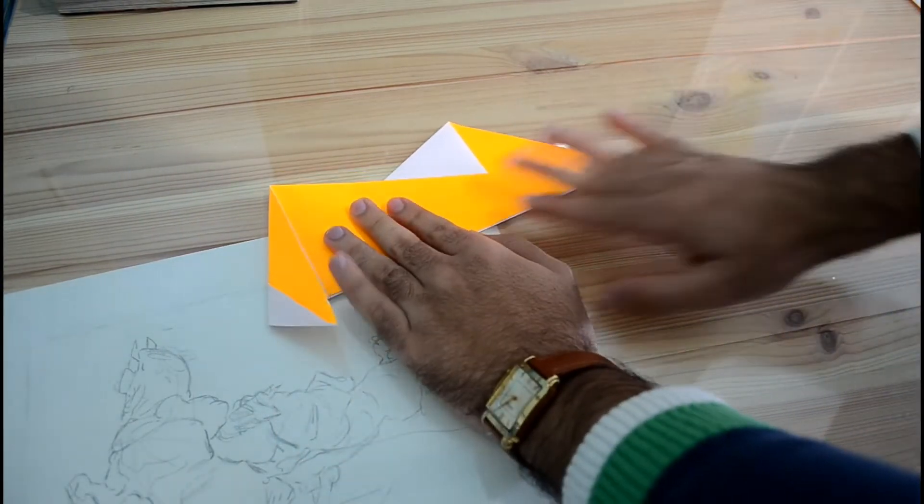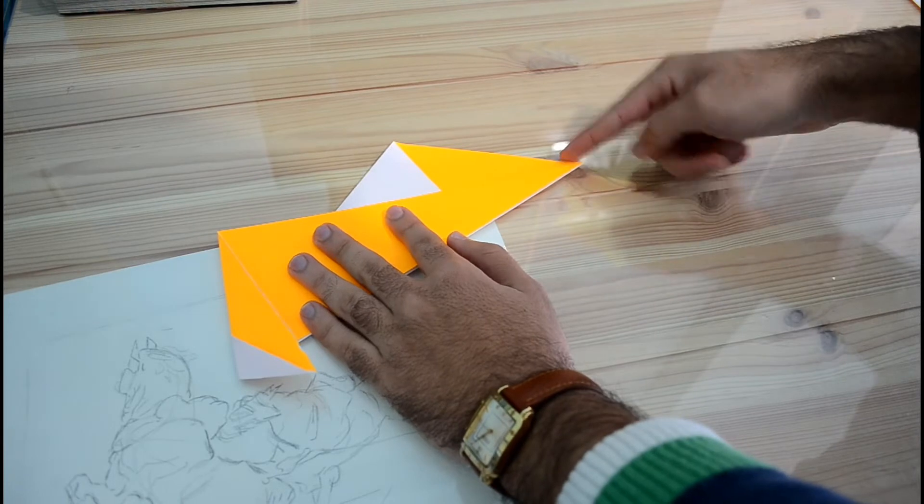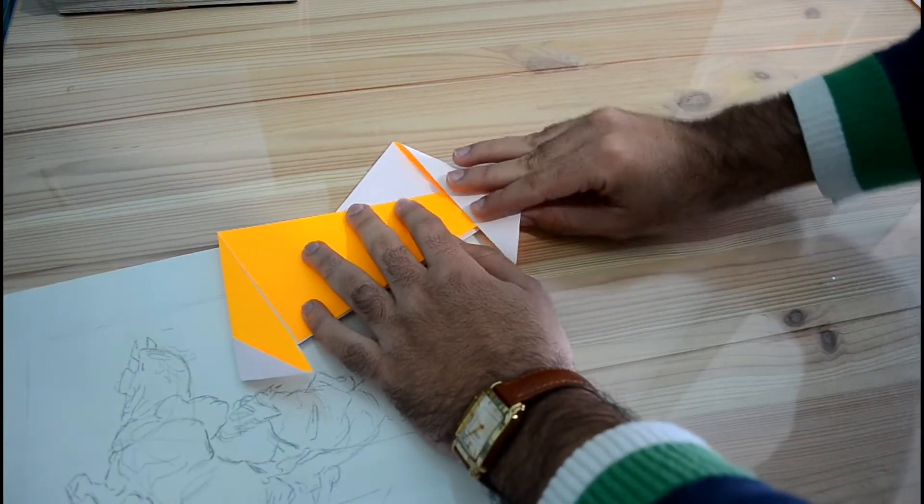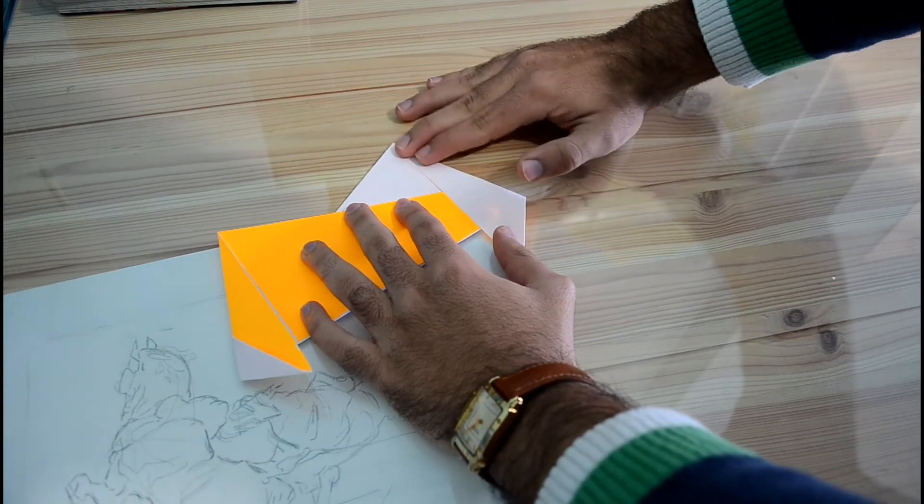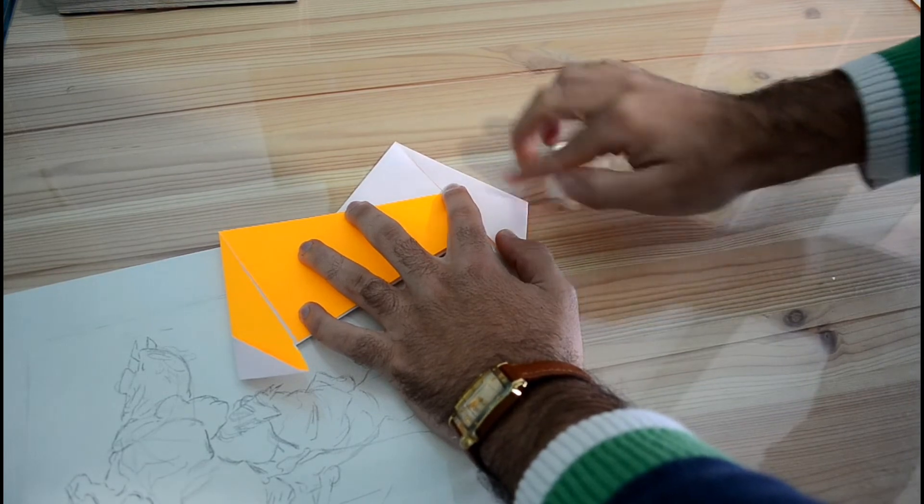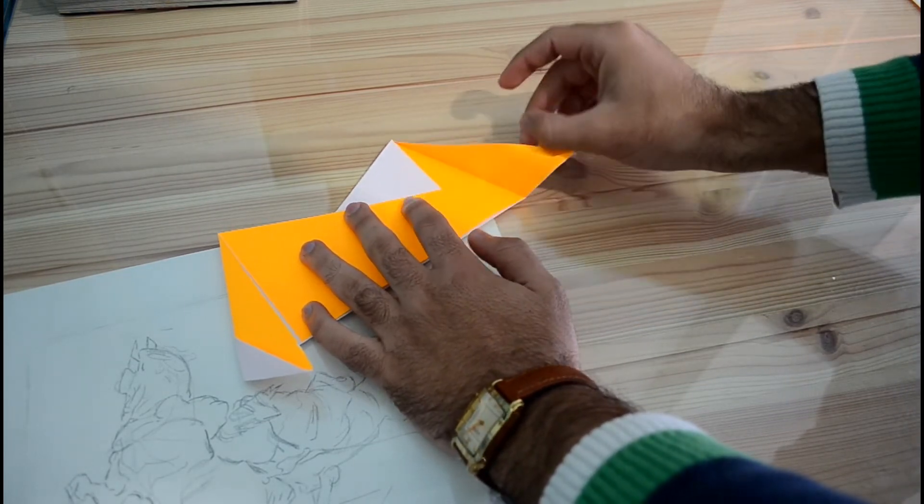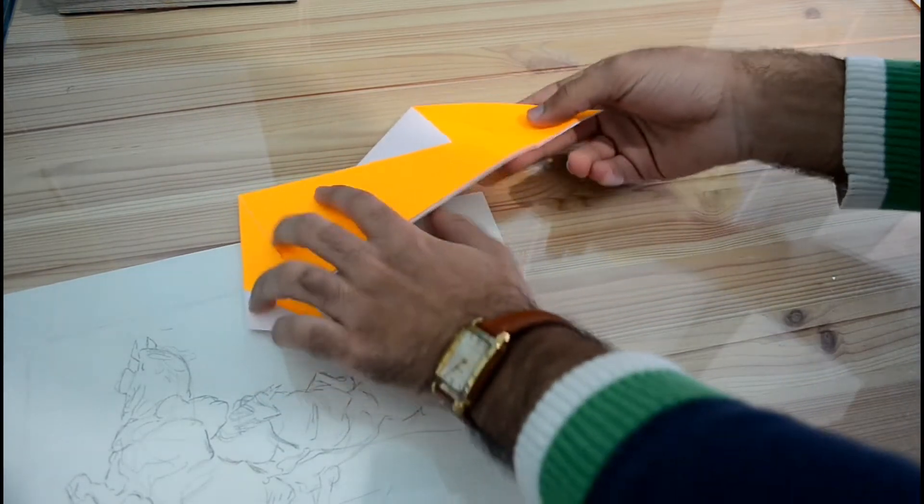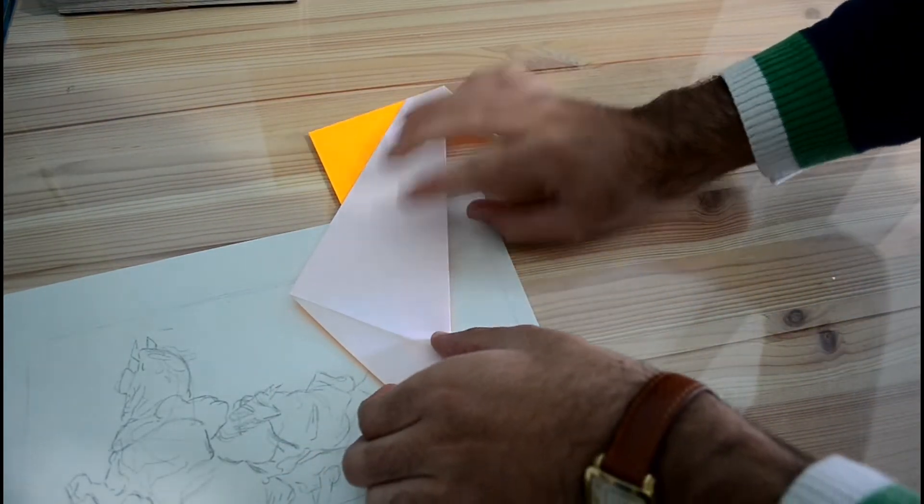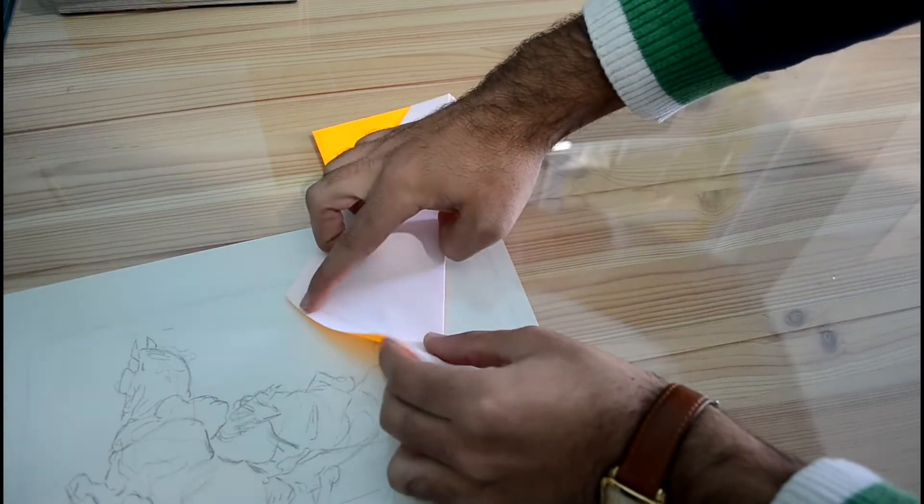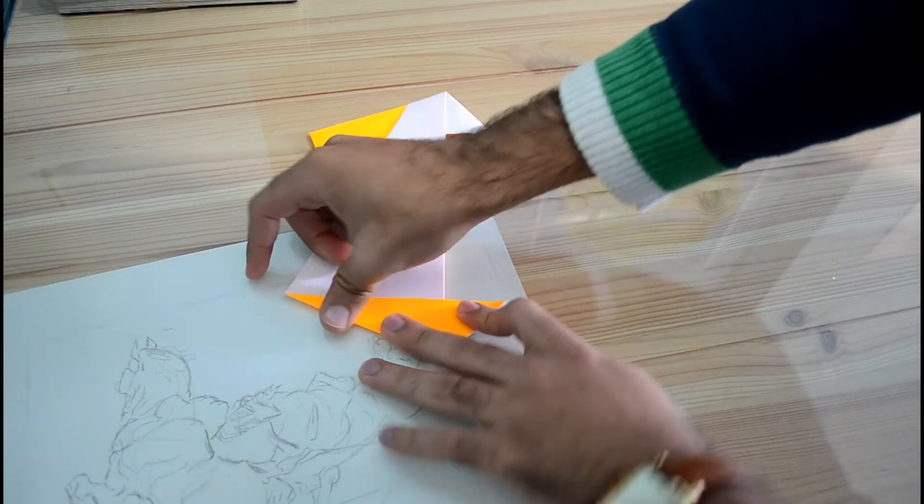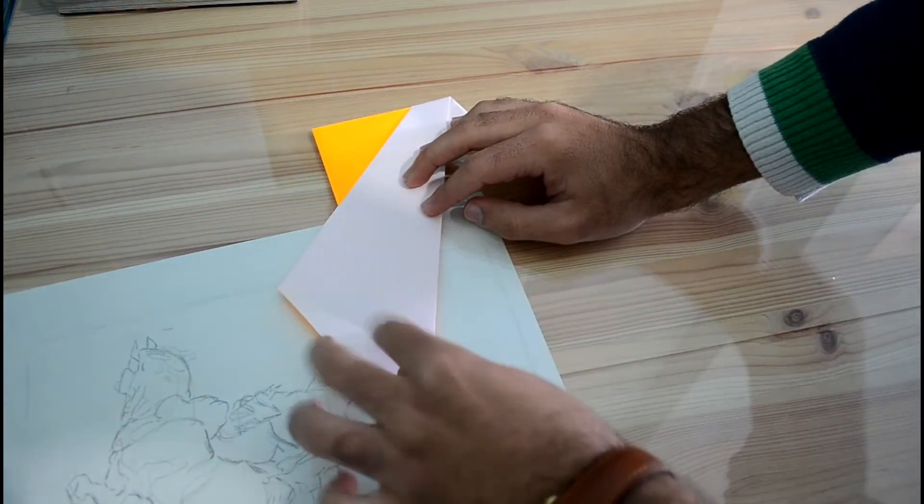For the second part of the paper, take this line and fold it right here. Fold it to the other side and fold on this one that we just made. Fold it to the other side, then unfold.